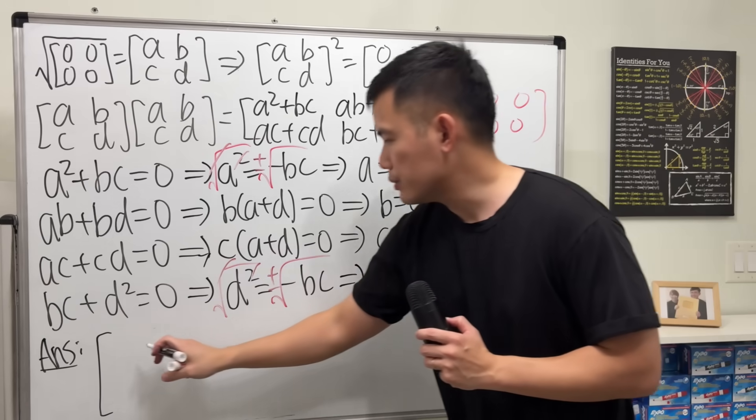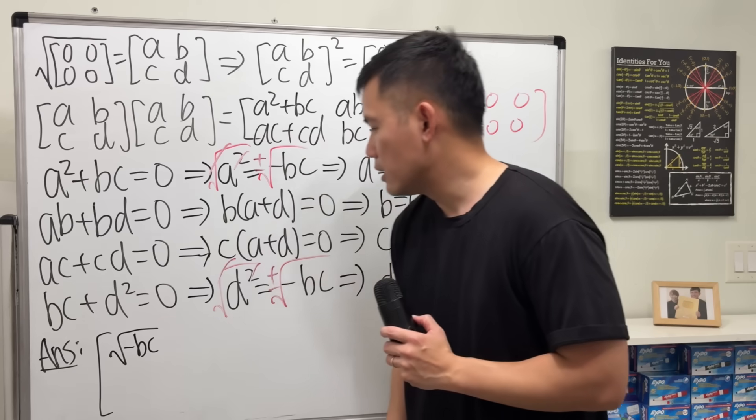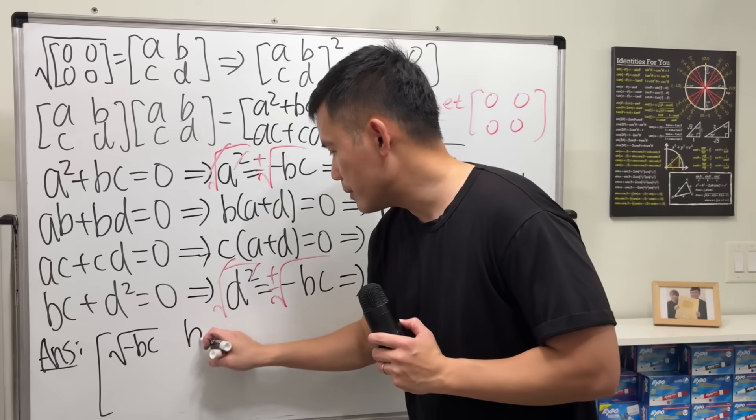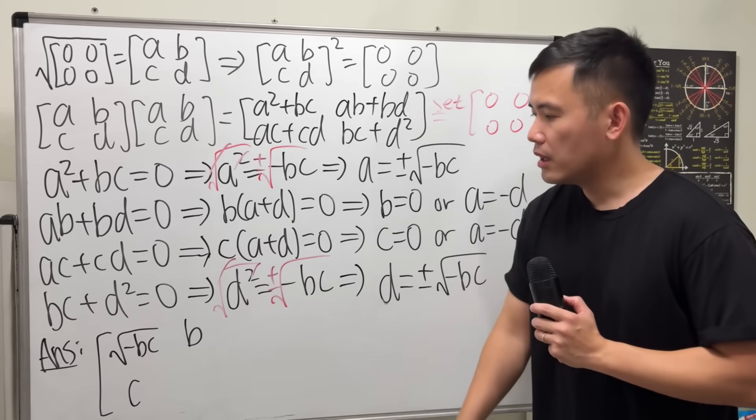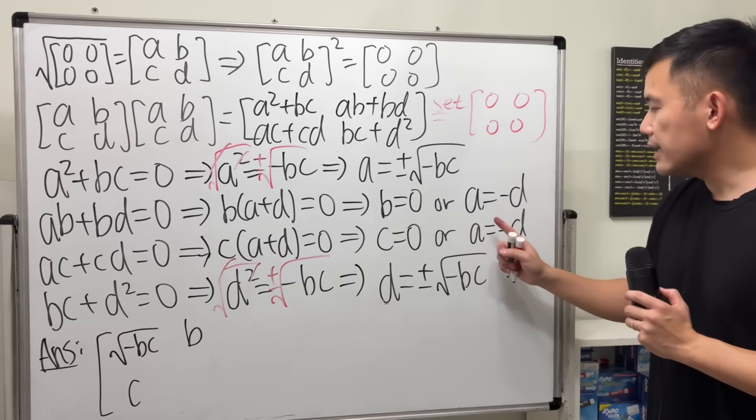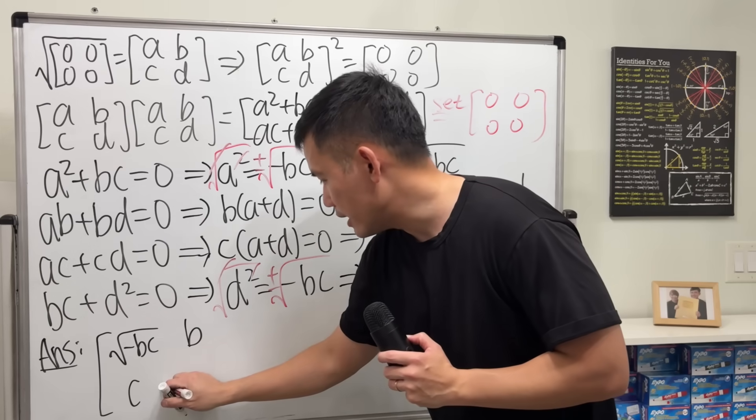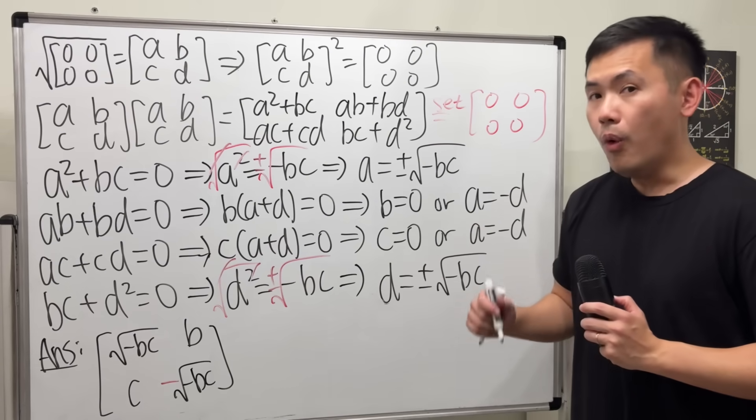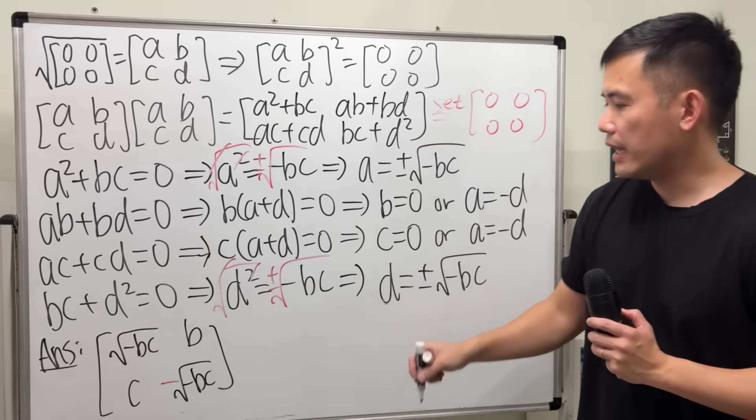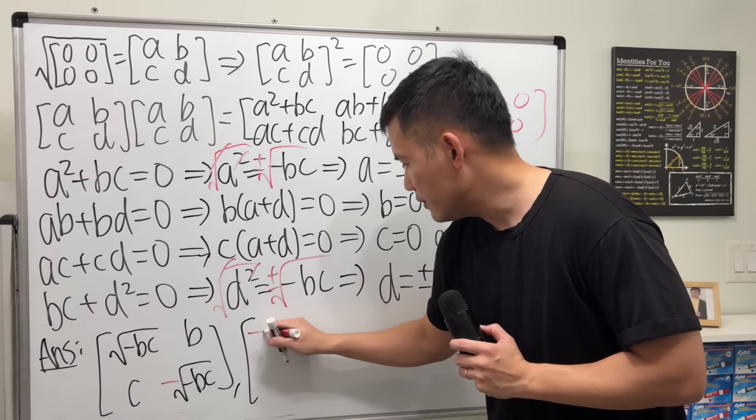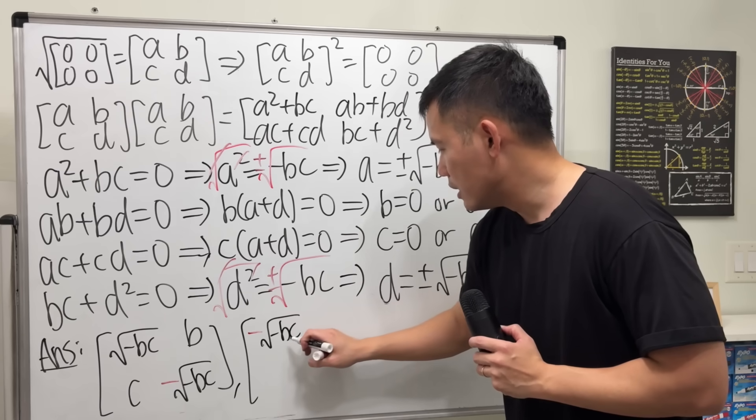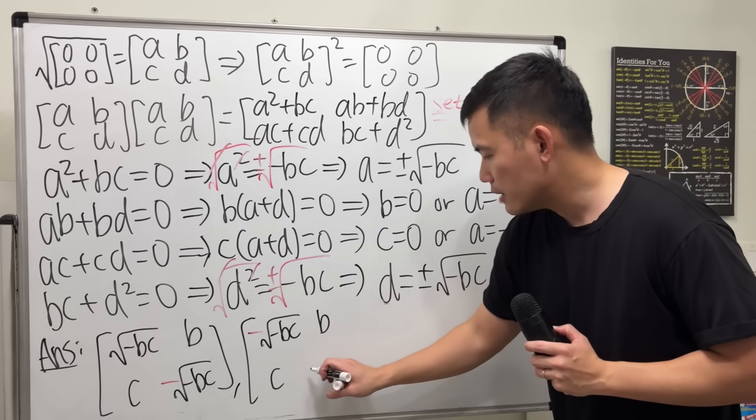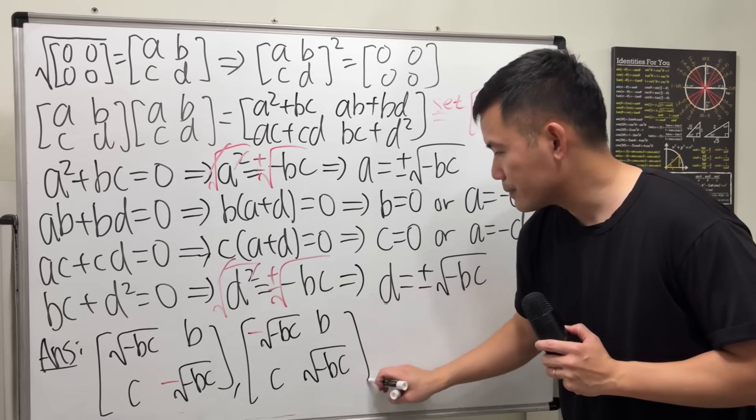So, if you want to get square root of [0, 0; 0, 0], we are going to end that with... First, let me just put the positive square root of negative bc for the a. And then, b and c, you can pick anything that you want. So, we call them free variables. So, just put them down. Now, if this is a, then d has to be negative a. So, we just have to have the negative square root of negative bc. Or, we could have put negative square root for the a. So, we can also have negative here. Square root of negative bc. Again, b and c are free. And then, in that case, d will just be the opposite of that. Square root of negative bc. Just like this.